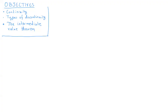We're going to discuss the notion of continuity now. A function f is called continuous at a if the limit as x tends to a of f of x is equal to f of a.